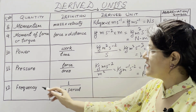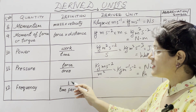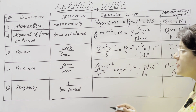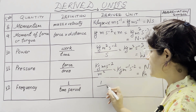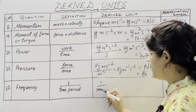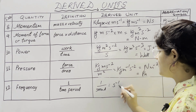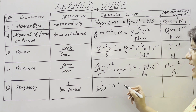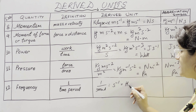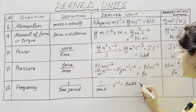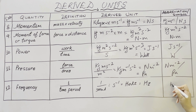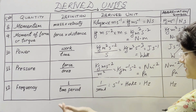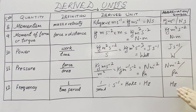The next physical quantity is frequency. It is the reciprocal of time period. The unit of time period is second, so frequency is 1 per second, written as s⁻¹. The SI unit of frequency is hertz, written as Hz. The number of cycles completed in 1 second is known as frequency.